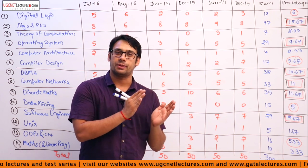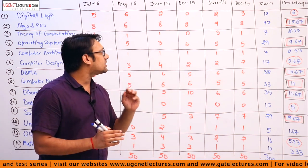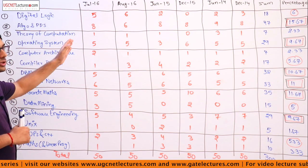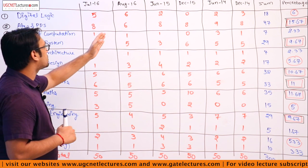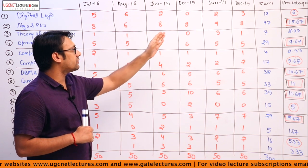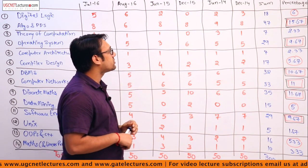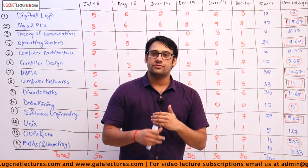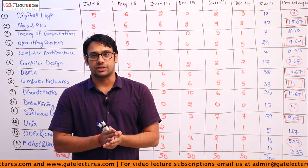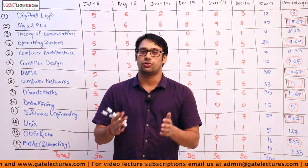This analysis has been done for Paper 2 as well as Paper 3. Here you can see this is a Paper 2 analysis covering the July 2016 paper, August 2016 question paper, June, December, June 2014, and December 2014 question papers. We have seen what is the number of questions asked from various subjects and according to the findings, what are the subjects which are most crucial.